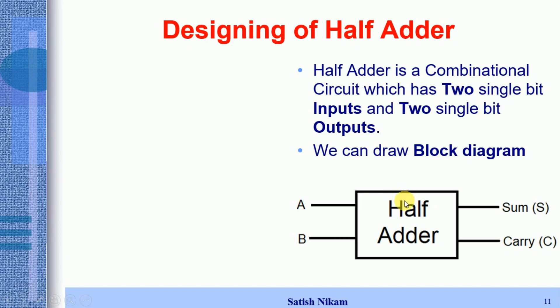Since we have this information, we can draw the truth table. As this is a combinational circuit, in a previous lecture we discussed the procedure for designing a combinational circuit, and we can apply that same procedure here. The first step is to plot the truth table for this half adder circuit.